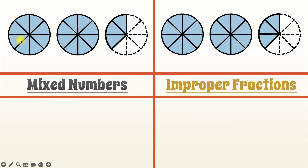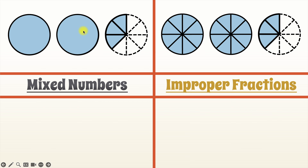So in this model, we have three circles. In each of the three circles, it's cut into eight equal pieces. This first circle has everything filled, so we could call that one whole circle. The second circle is exactly the same — all eight of the pieces are filled, so that's another whole circle. So far we have two whole circles, and we have a whole number two that represents those two whole circles.